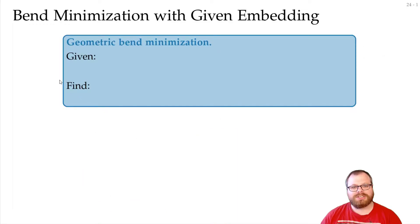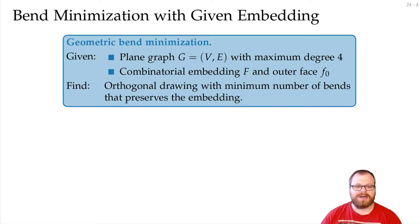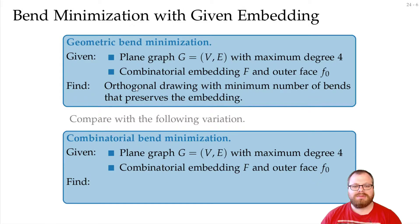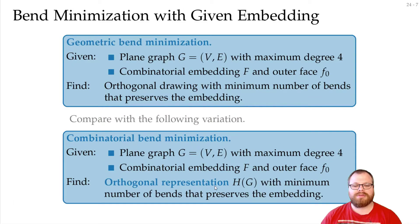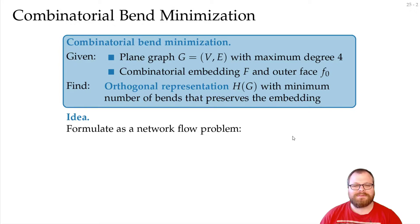The problem we have in general is the geometric bend minimization problem. We are given a plane graph with maximum degree 4 and a combinatorial embedding together with the outer face, and we want to find an orthogonal drawing where the number of bends is minimized among all drawings that preserve the embedding. Since we don't talk about drawings yet but only about representations, instead of the geometric version we want to solve the combinatorial one — same input, but finding an orthogonal representation. To solve this, we make use of network flows.